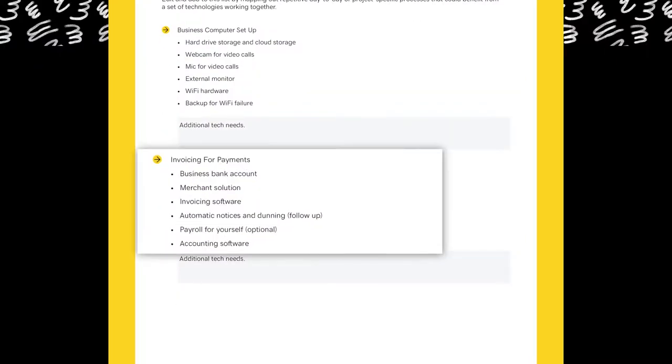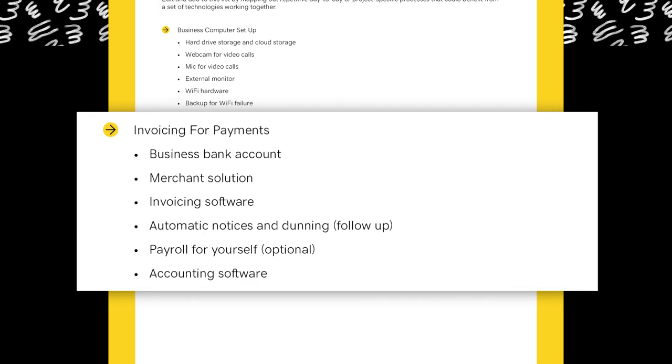Next, there's the important matter of how you will be paid — invoicing and banking. Set up a separate business banking account and a merchant solution for how you will take credit card and ACH payments. You need invoicing software that will follow up automatically for notices and failed payments, along with a way to pay yourself payroll. Lastly, if you're not outsourcing your accounting, you'll need a solution that will help prevent tax season from becoming a nightmare.